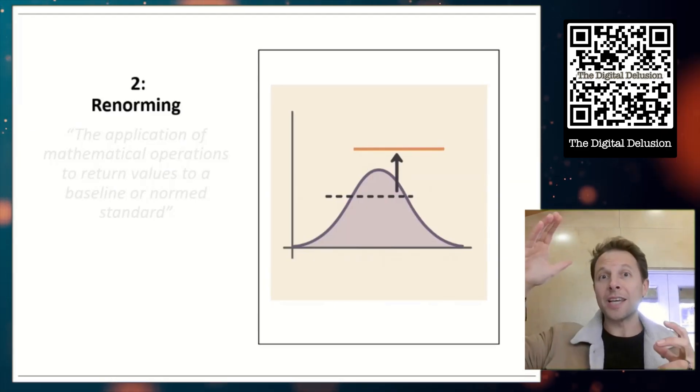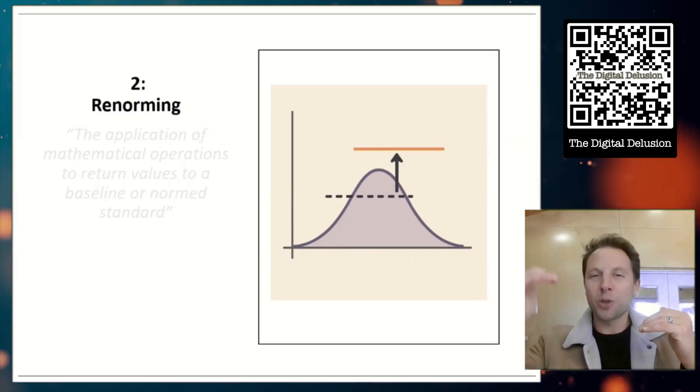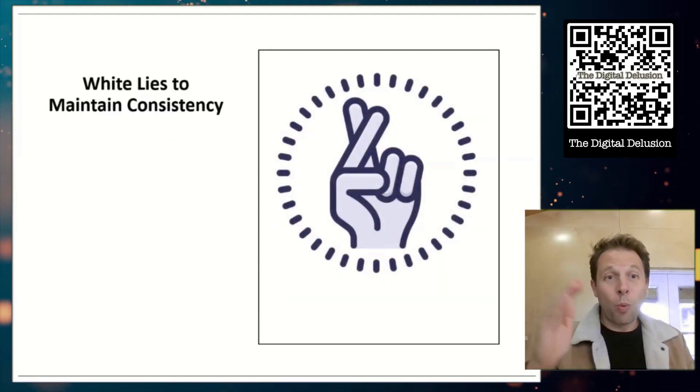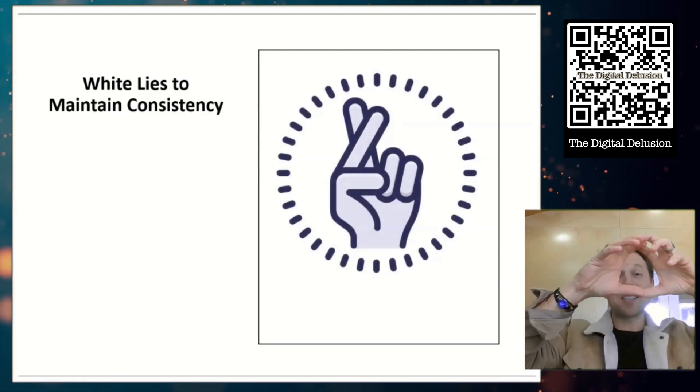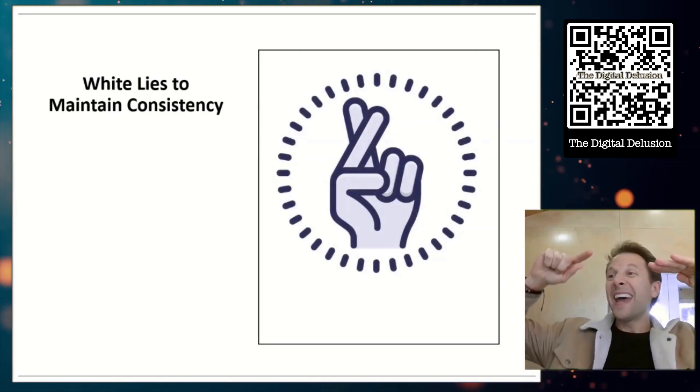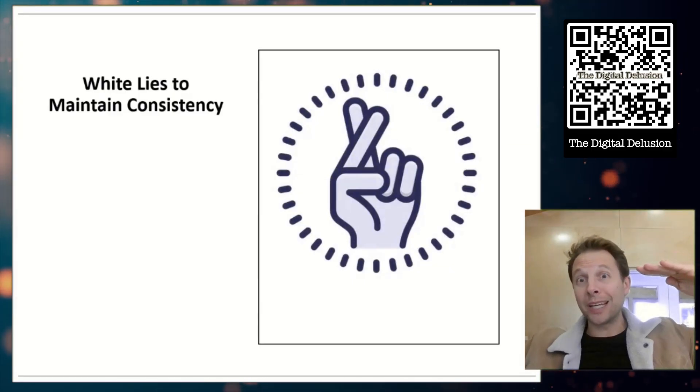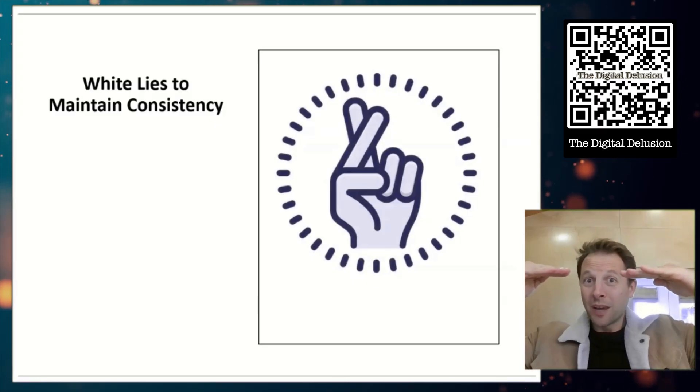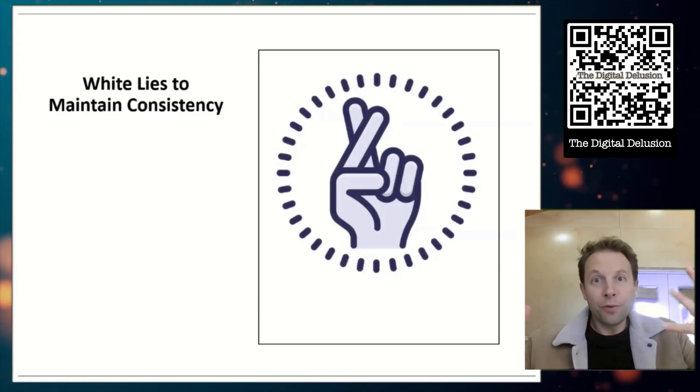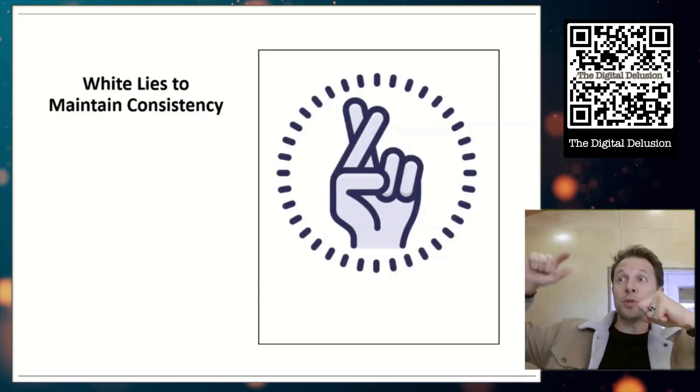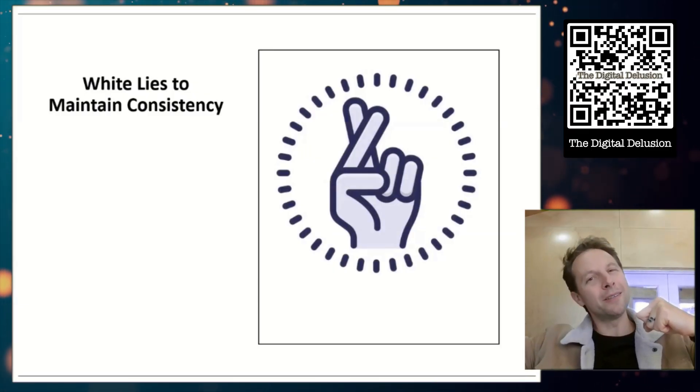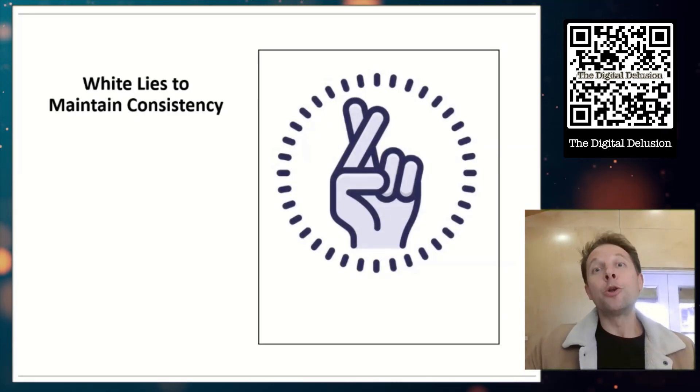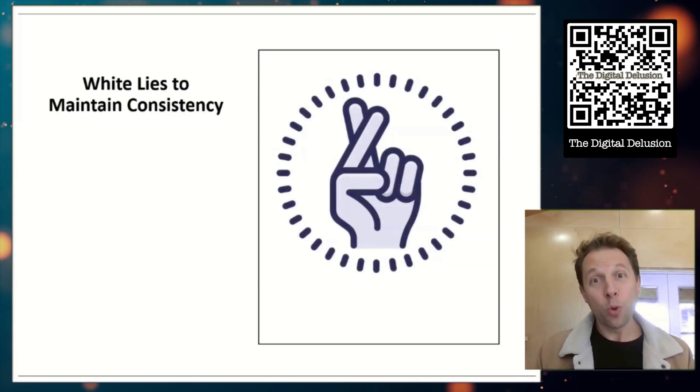Re-norming basically says any time a group of people perform worse or better on a test, what we can do is simply shift their scores to make it look equivalent to everyone else. So realistically, re-norming is white lies to maintain consistency. Let's say everyone takes a test this year and gets 20 points. Next year, every new kid takes the same test, but they only get 10 points. Re-norming says, cool, let's just give all of those new kids 10 bonus points to make it look consistent across years. Or flip it. If everyone gets 20 this year and everyone scores 30 next year, let's just take away 10 points for them to make it look equivalent.